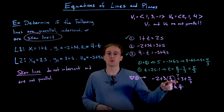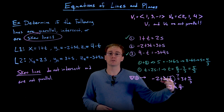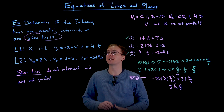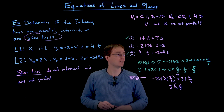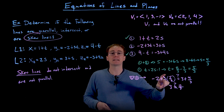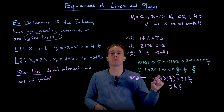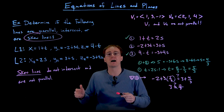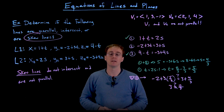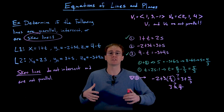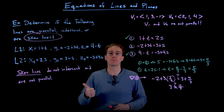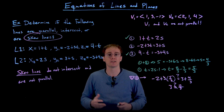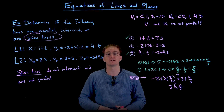If we had obtained a true statement in that check, it would indicate intersecting lines. In that case, we'd plug the values of s and t back into the parametric equations to find the actual point of intersection. Through this example we've seen how to determine whether lines are parallel, skew, or intersecting — and how to find the point of intersection when they do intersect.